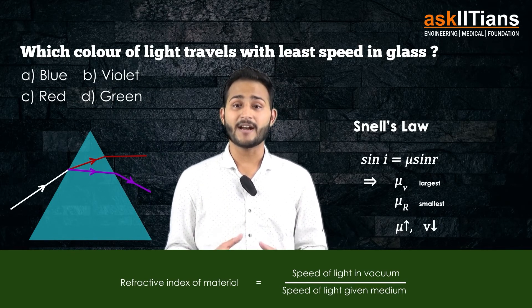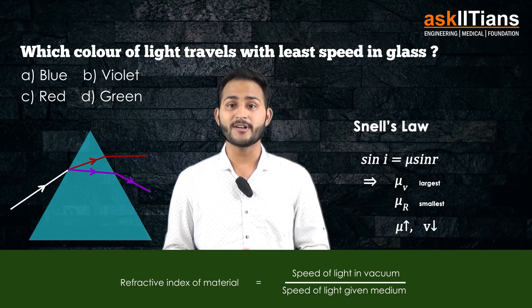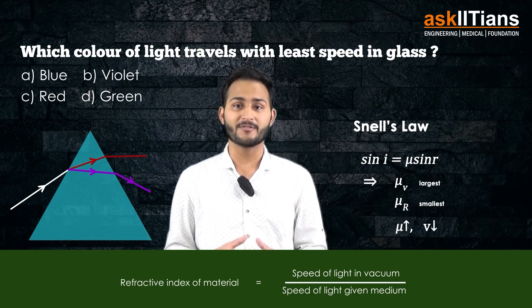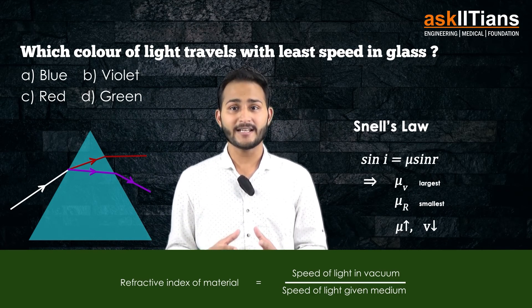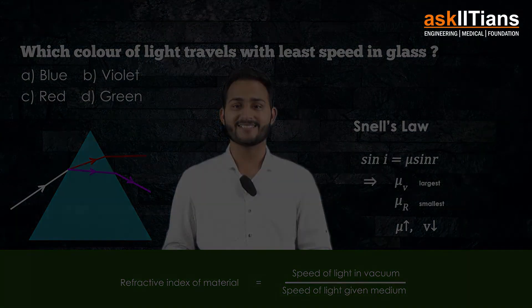And since we know that the refractive index corresponding to the violet color of glass is the largest, that means the speed of violet light in the glass should be the least.